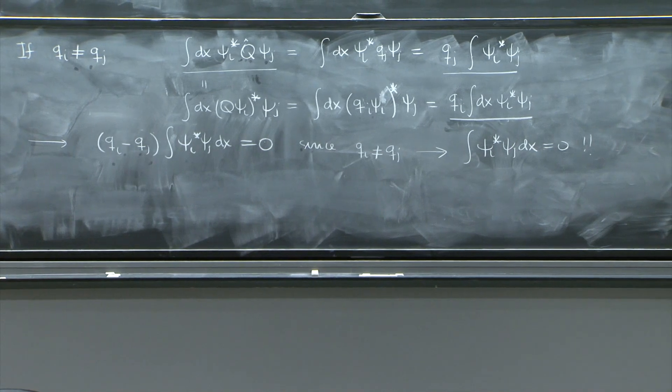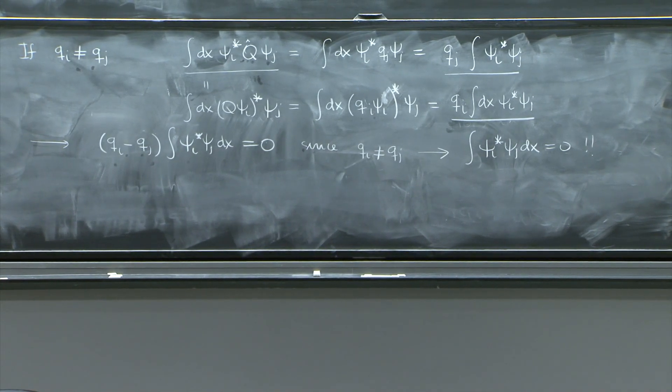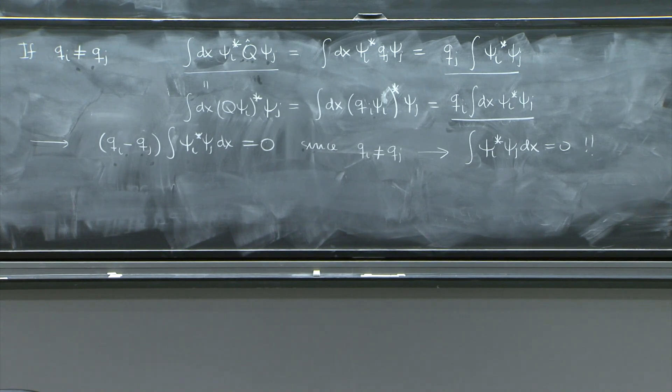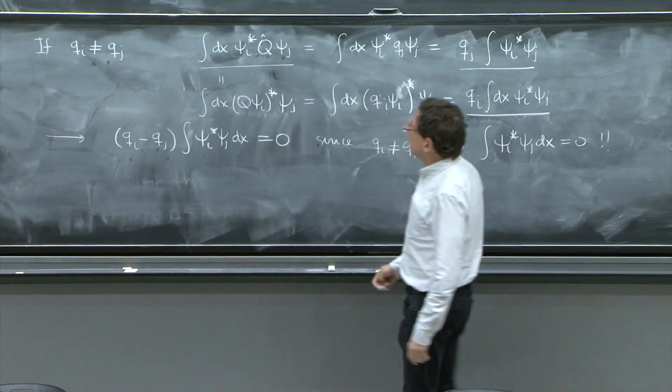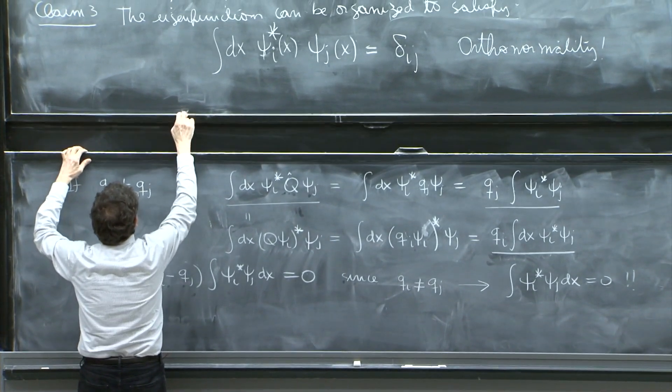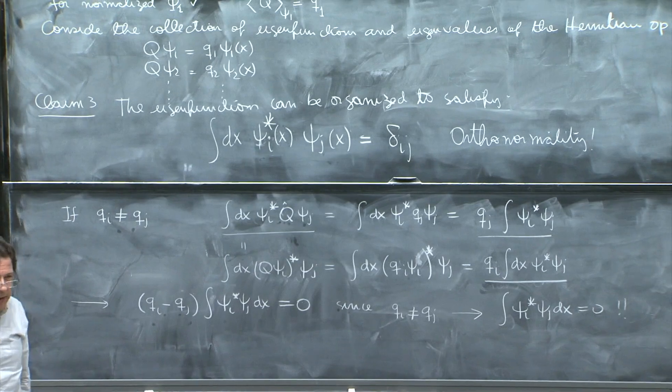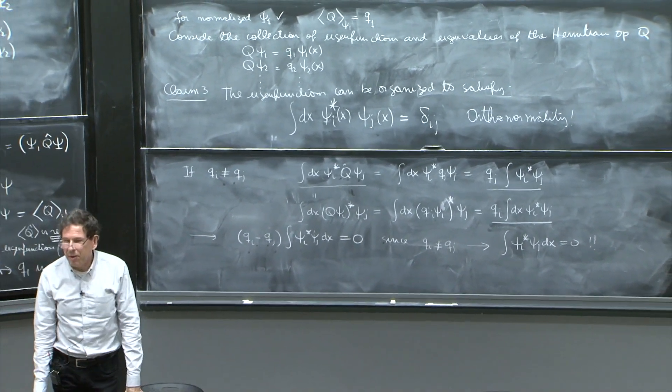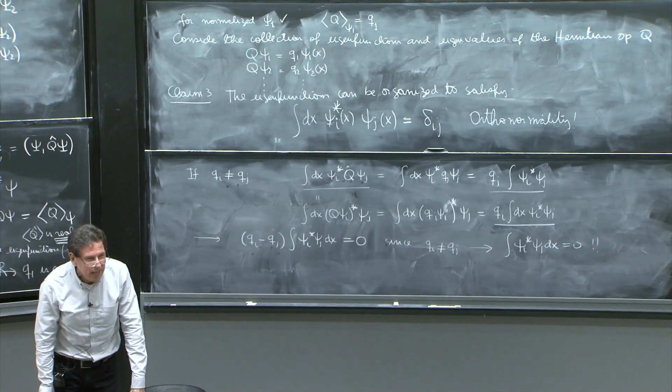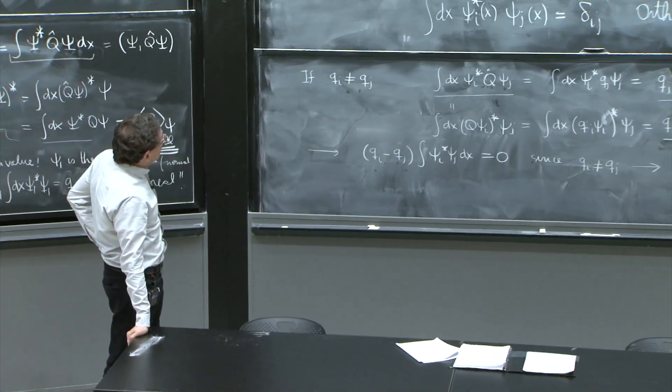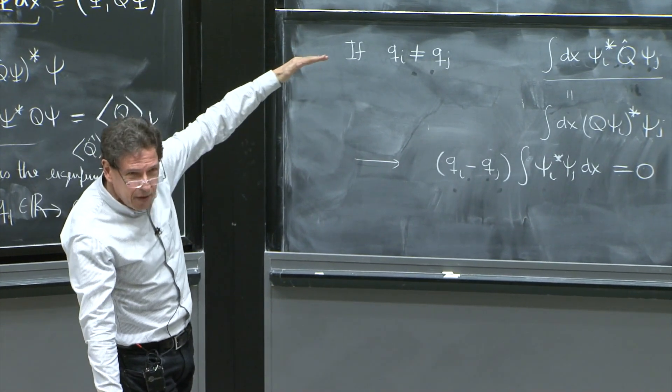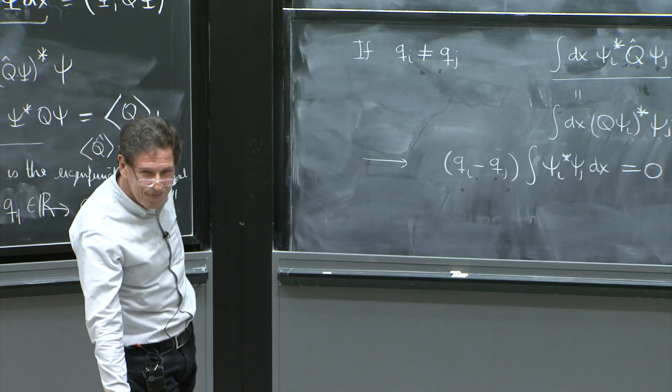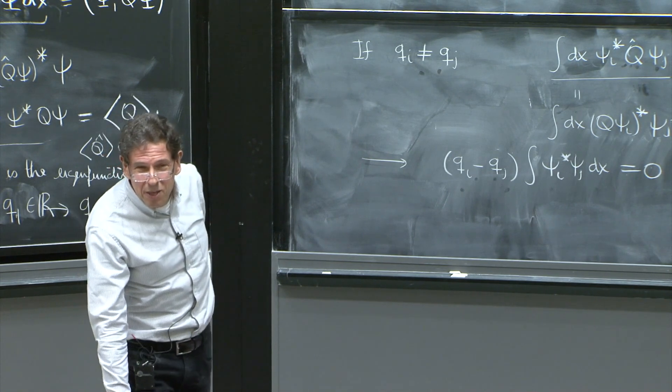So since we've assumed that qi is different than qj, we've proven that integral psi i star psi j dx is equal to 0. And that's part of this little theorem that the eigenfunctions can be organized to have orthonormality and orthogonality between different ones. My proof is good, but it's not perfect because it ignores one possible complication, which is that sometimes something very interesting happens in quantum mechanics called degeneracy. And degeneracy means that there may be several eigenfunctions that are different but have the same eigenvalue.